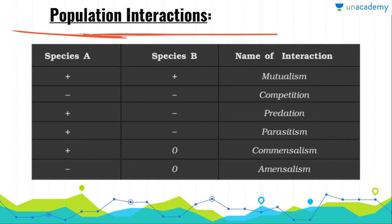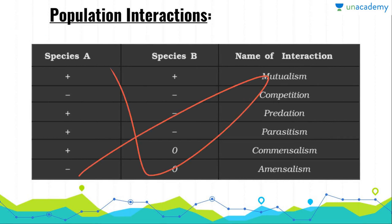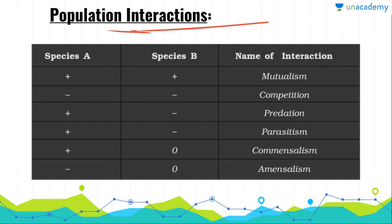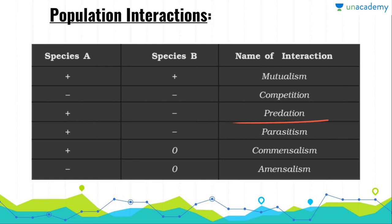Now, what is population interaction? As I told you earlier in the first lesson, as an individual we cannot survive in this environment — we have to interact with other species or other individuals even for our survival. These interactions can be classified into six types: mutualism, competition, predation, parasitism, commensalism, and amensalism.